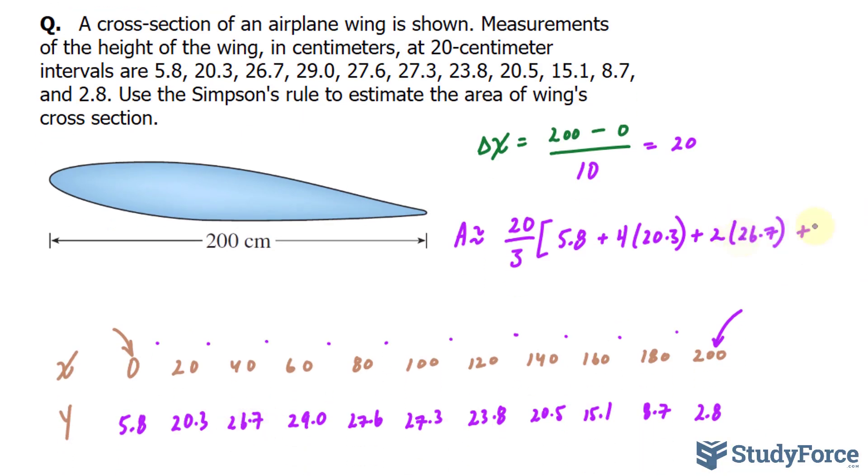So 2 times this number, 26.7, plus 4 times 29, plus 2 times 27.6. And you keep doing this until you reach the very end.